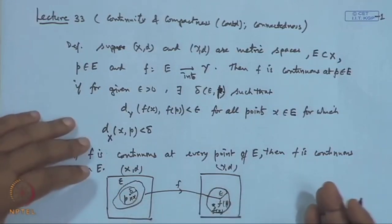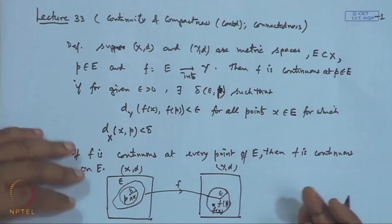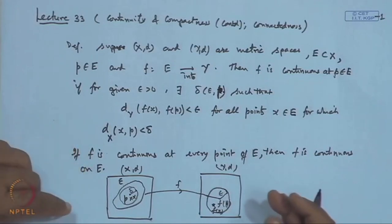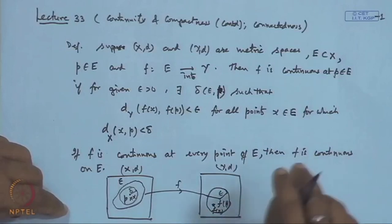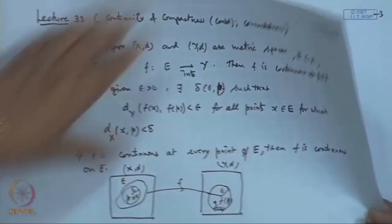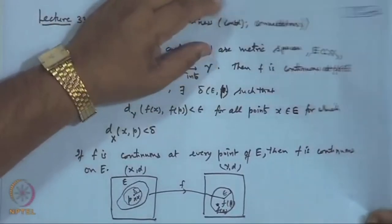This is similar to the epsilon-delta definition we used over the real line. That is the general form. And if f is continuous at every point of E, then we say f is continuous on E.